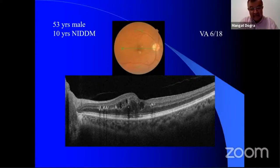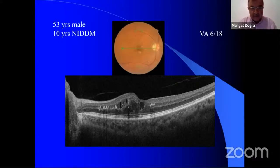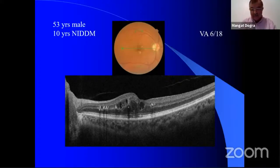On OCT, what he was trying to say about the hyper-reflective dots — I'm not sure, because everything is showing sort of a shadowing behind. So maybe these are all perhaps hard exudates.